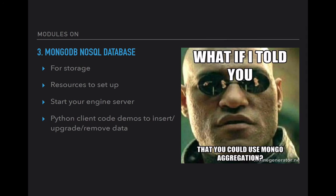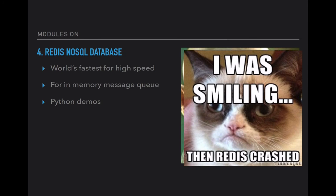There's another NoSQL database I'm using called Redis. I've used it for a few years — by no means am I an expert, but it's considered probably one of the world's fastest databases for high-speed use. From there we can build out some really nice message queuing between your client code and a listener component that listens to the markets through something like Interactive Brokers. I'll show you some Python demos related to Redis as well.